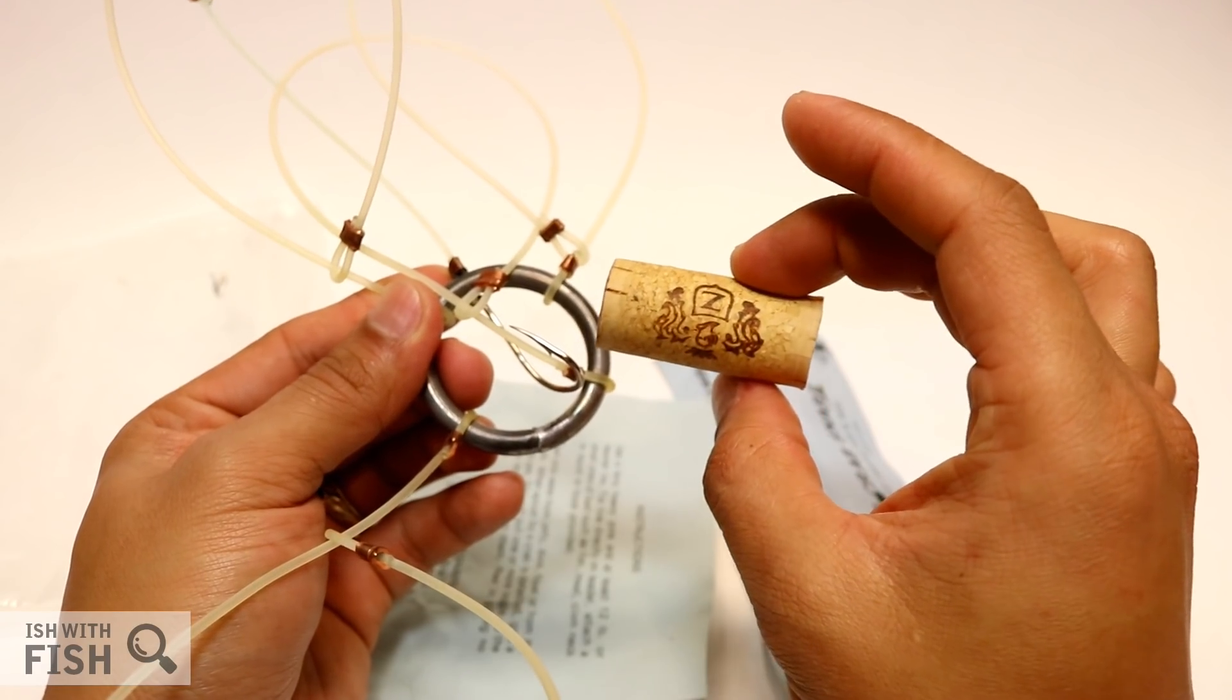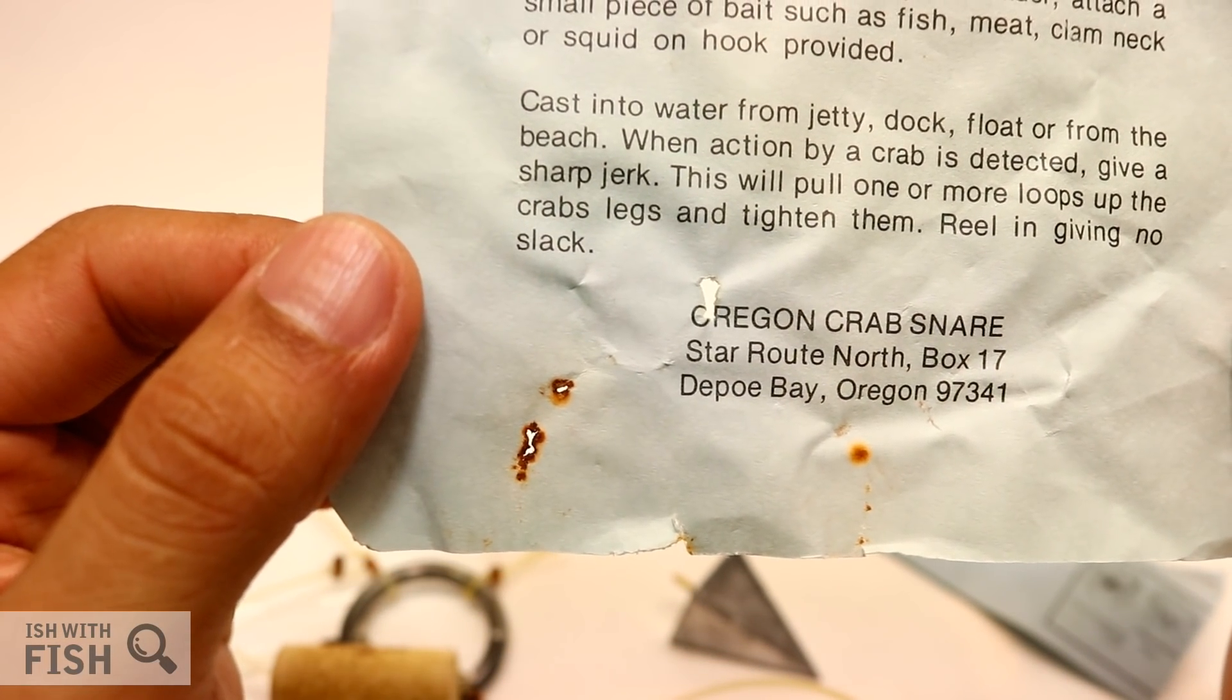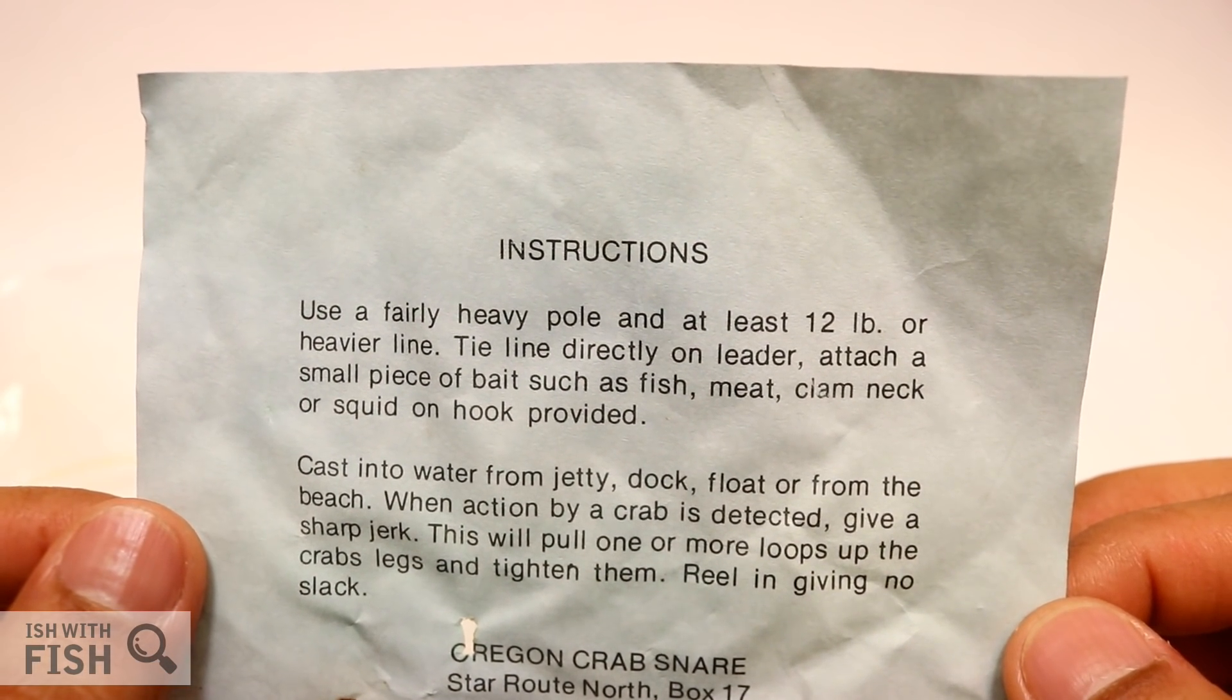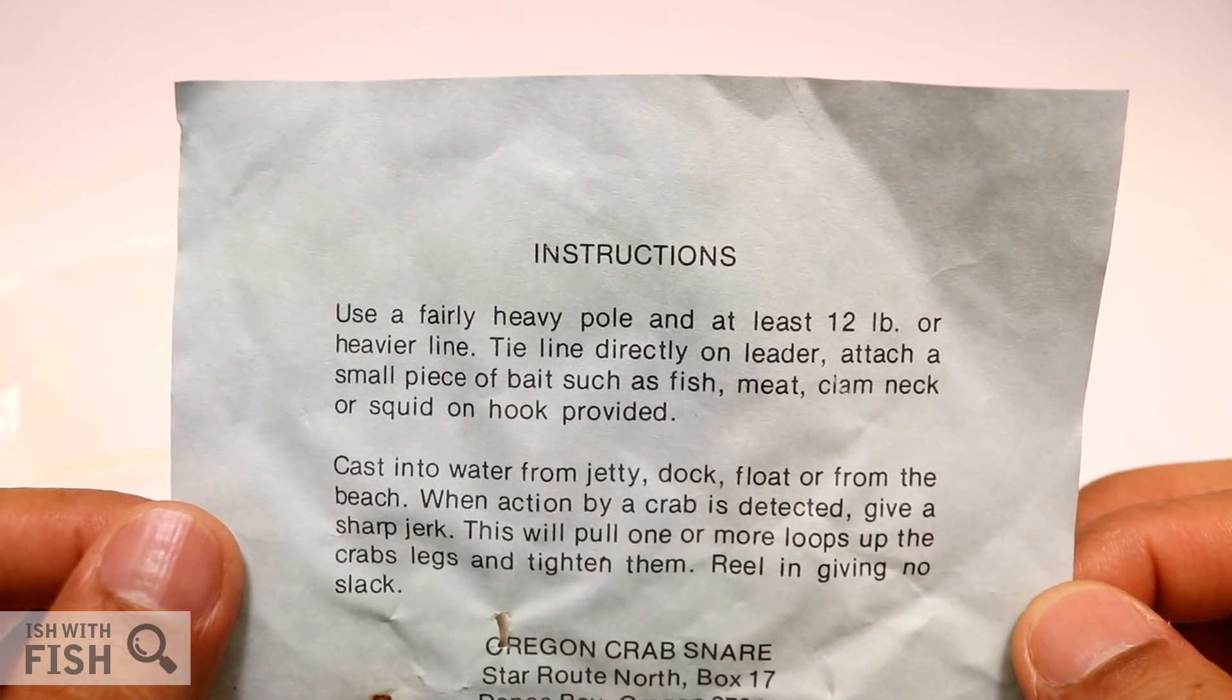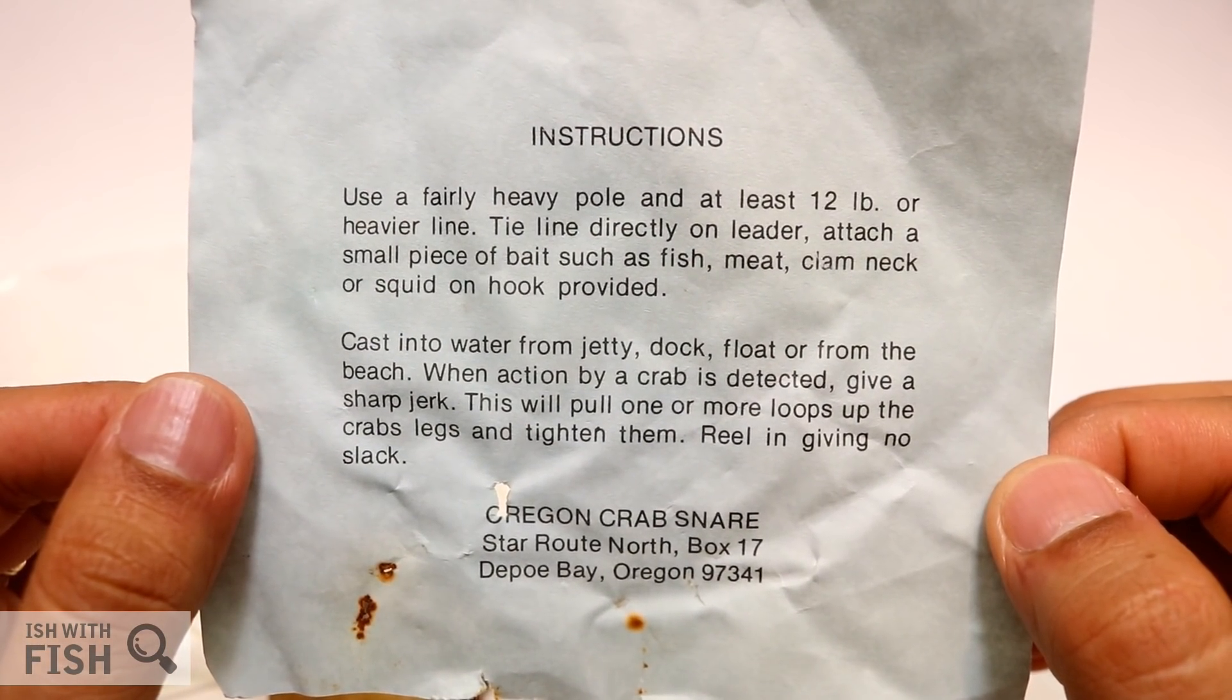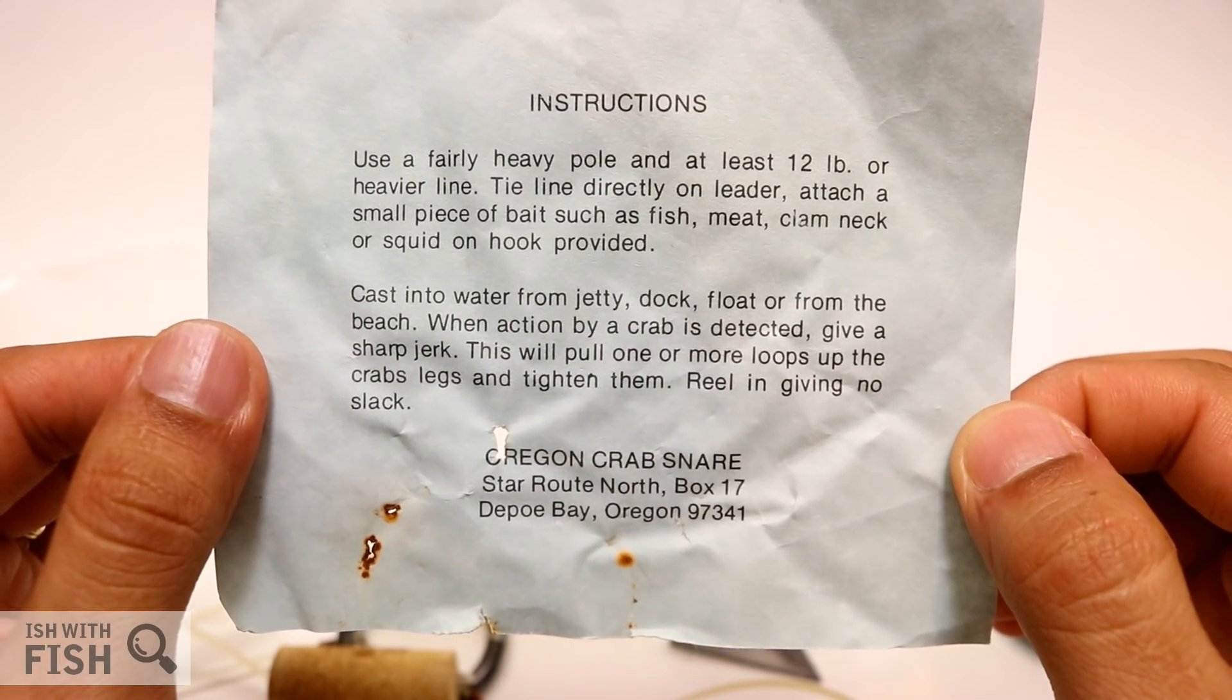Here are the original instructions that came with the Oregon Crab Snare. You can tell this is an old unit based on the rust that came off the staple. It says to use a fairly heavy pole and at least 12-pound or heavier line. Tie the line directly on a leader, attach a small piece of bait such as fish, meat, clam neck, or squid on the hook provided. Cast it into the water from the jetty, dock, float, or beach. When action by a crab is detected, give it a sharp jerk - this will pull one or more loops up on the crab's legs and tighten them. Reel in, giving no slack.